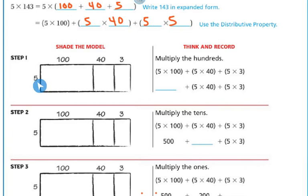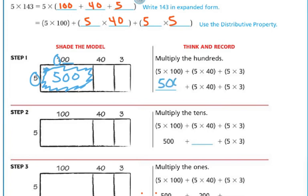First we're going to multiply 5 times 100 — I'm going to shade it in blue. When I multiply 5 times 100, I get 500, because 5 times 1 is 5 and then I have my two zeros, just like we did in the earlier lesson. So this box is worth 500. Now we have 500 plus 5 times 40, plus 5 times 3.